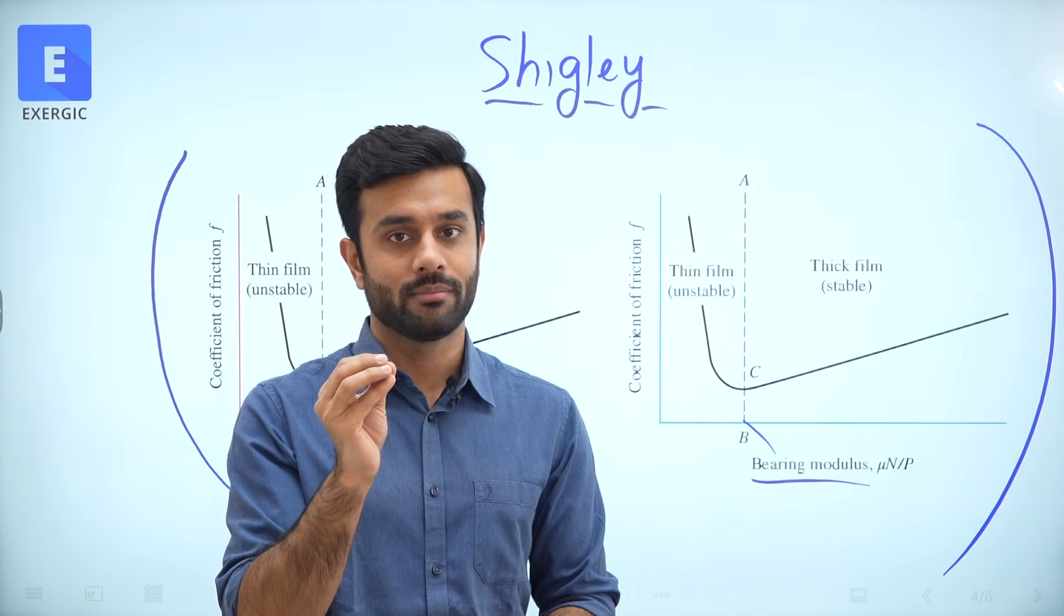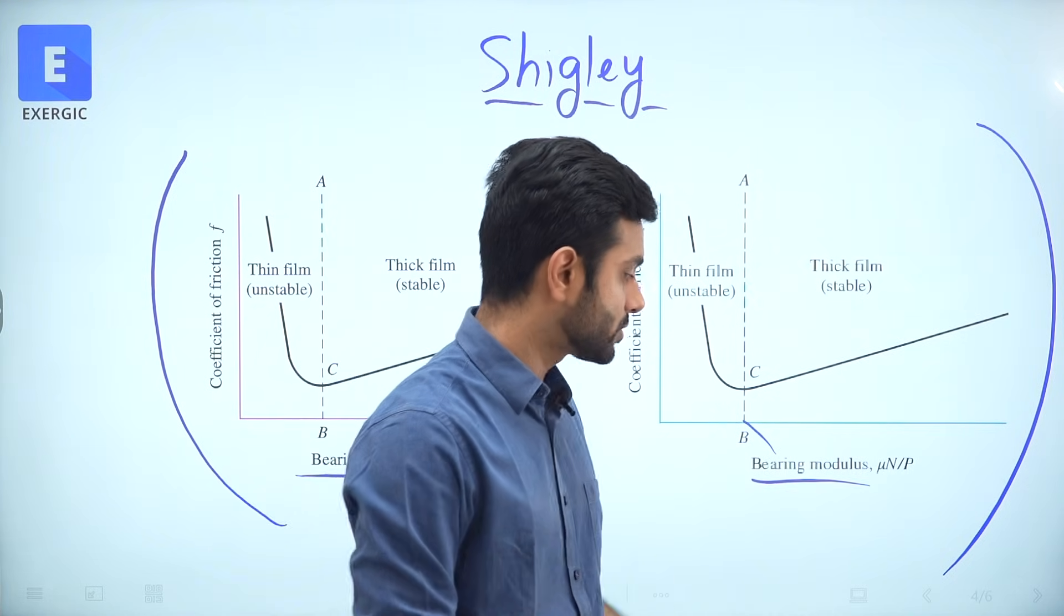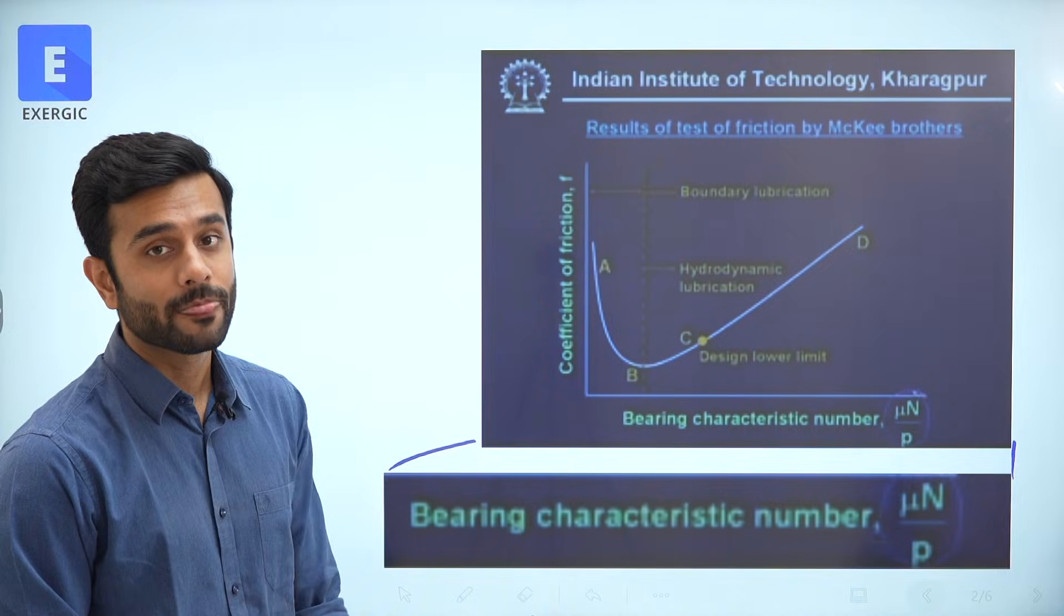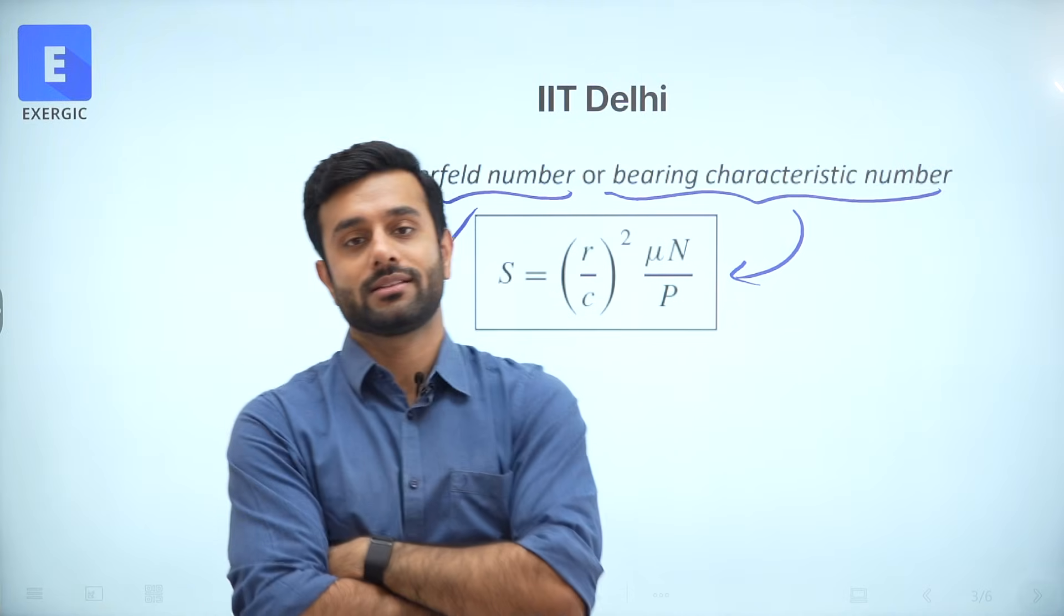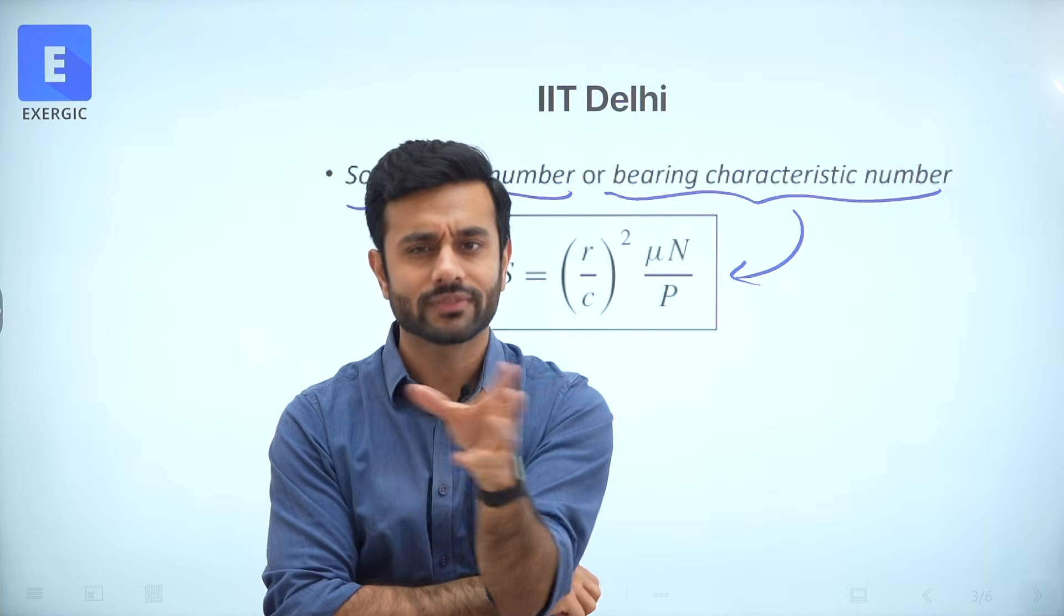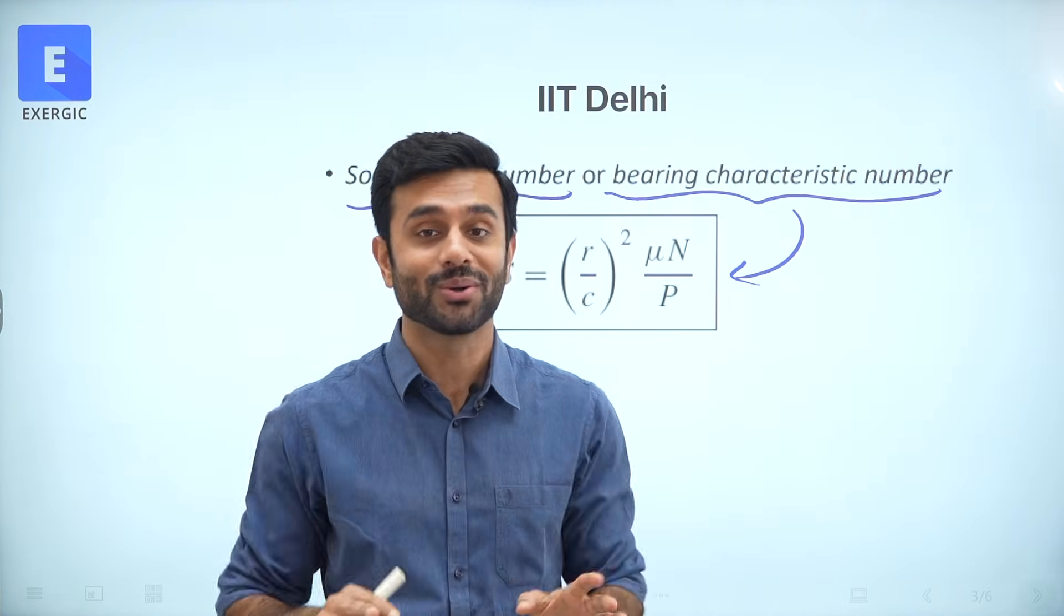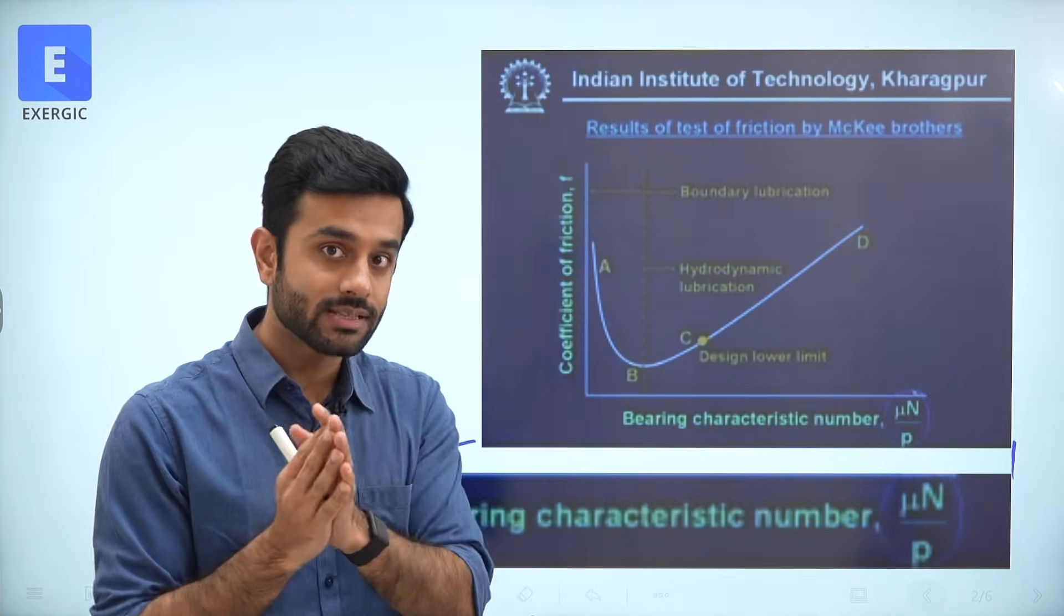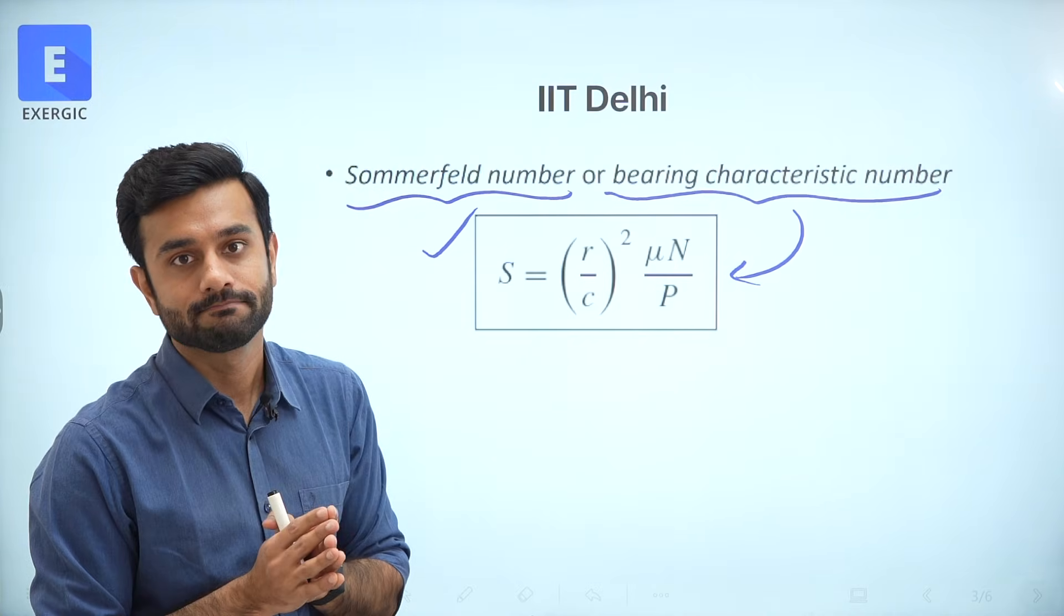IIT Delhi is saying that Bearing Characteristic Number is same as Sommerfeld Number, which has this formula. So this formula basically belongs to Bearing Characteristic Number as per IIT Delhi. And not just about IITs, let's have a look at this screenshot. This and this are two screenshots of the graph from the same book, Shigley. But they are of different editions.